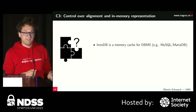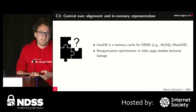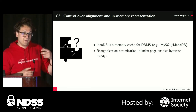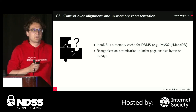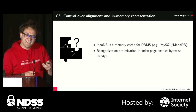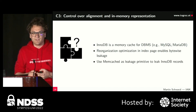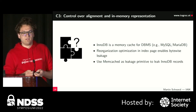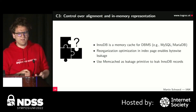For the third challenge, we looked at InnoDB — an in-memory cache for MySQL and MariaDB. When inserting into a record index page, an insert or update can fail, triggering a reorganization optimization that reorders certain records. This allows us to byte-by-byte shift a victim's data into attacker-controlled data. We again use Memcached for amplification to leak InnoDB records.